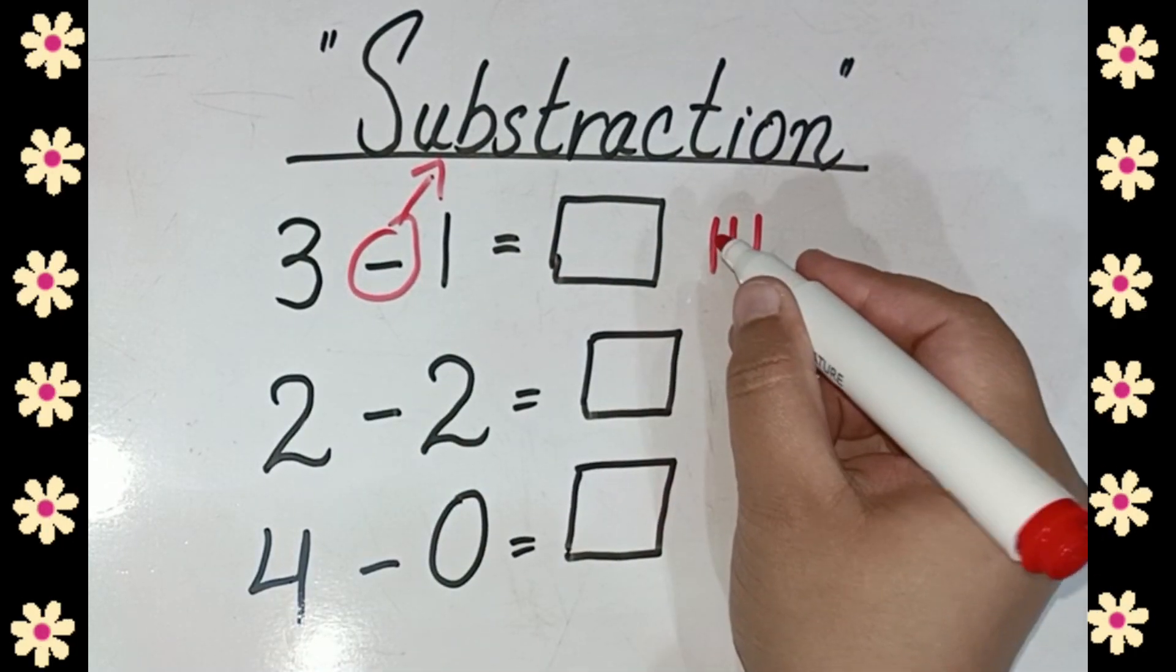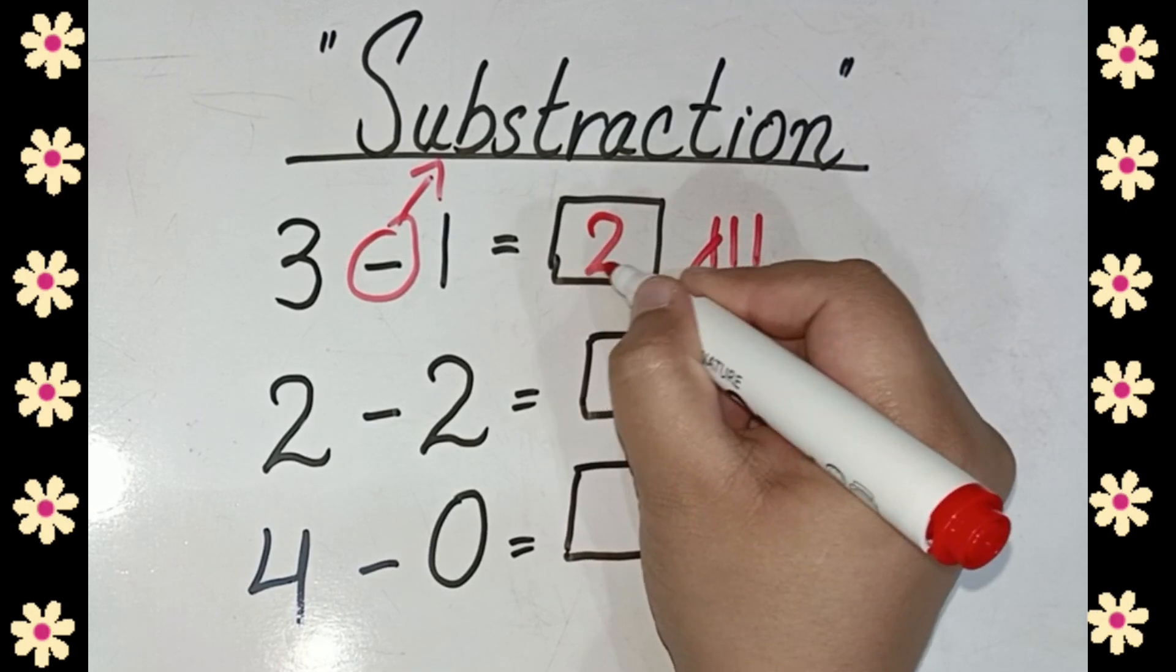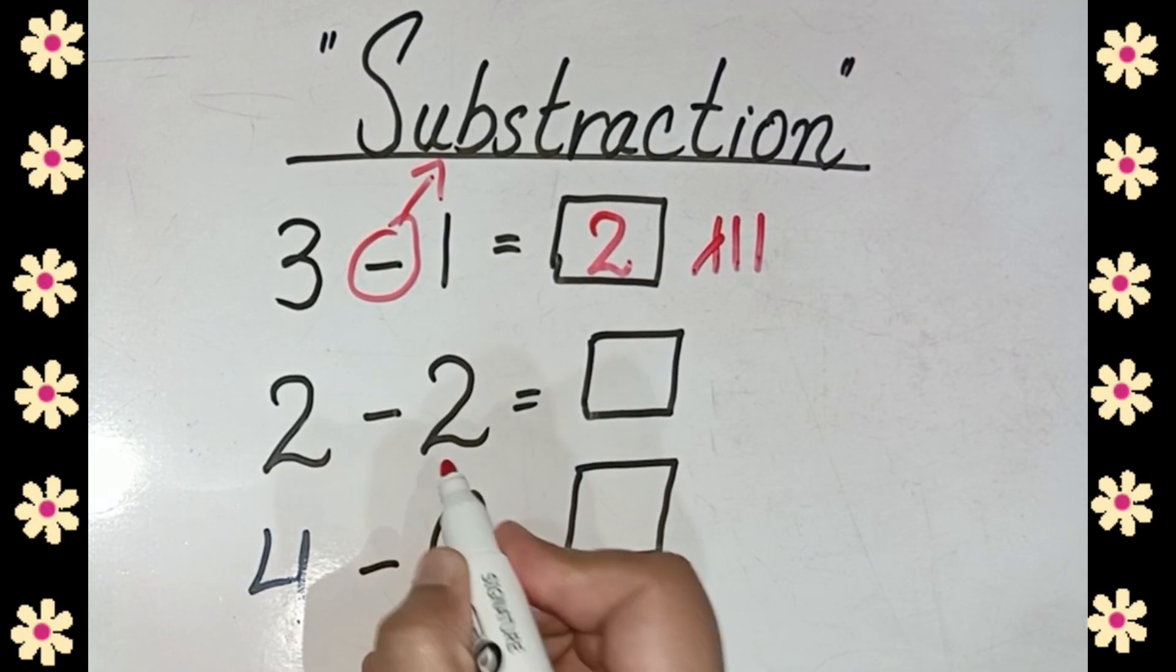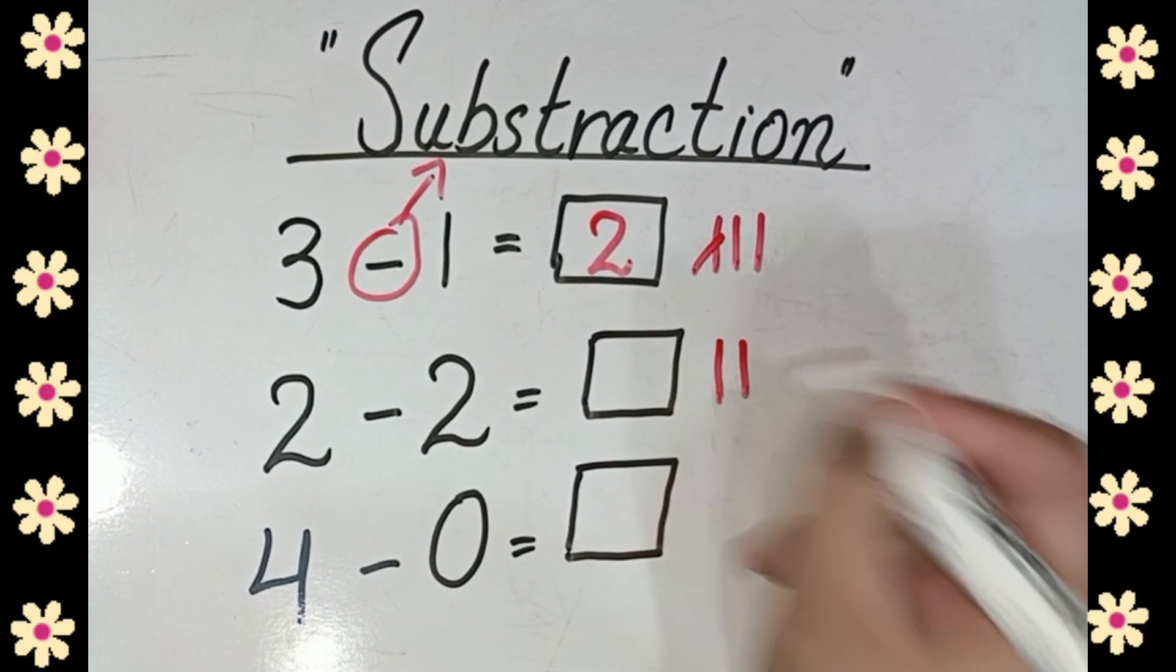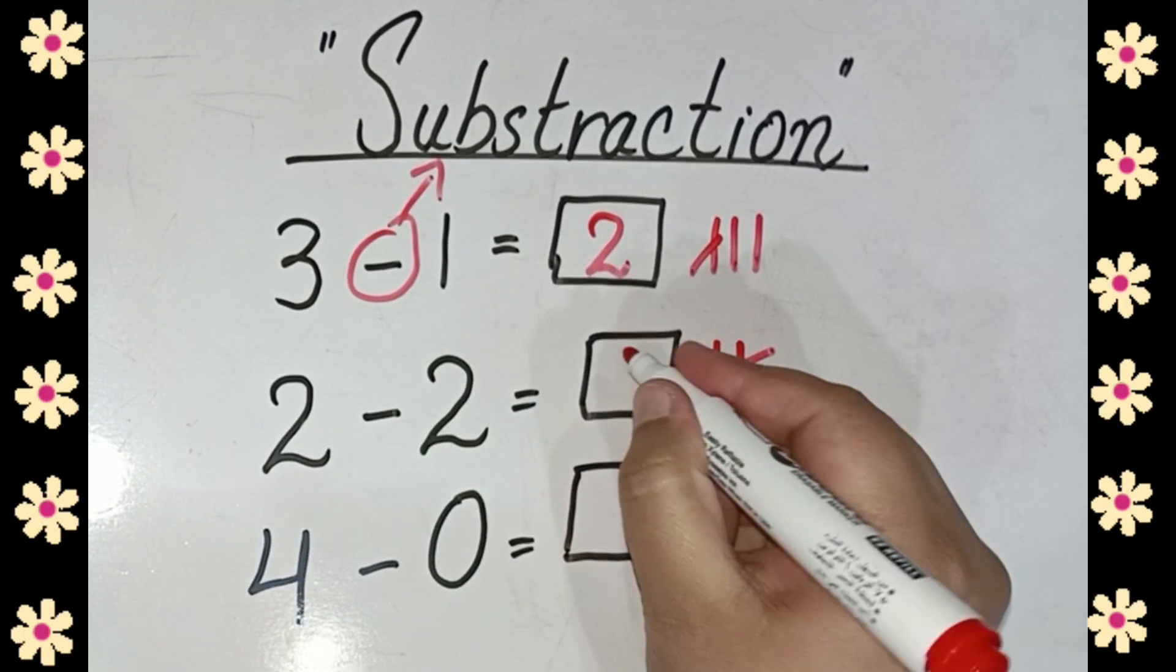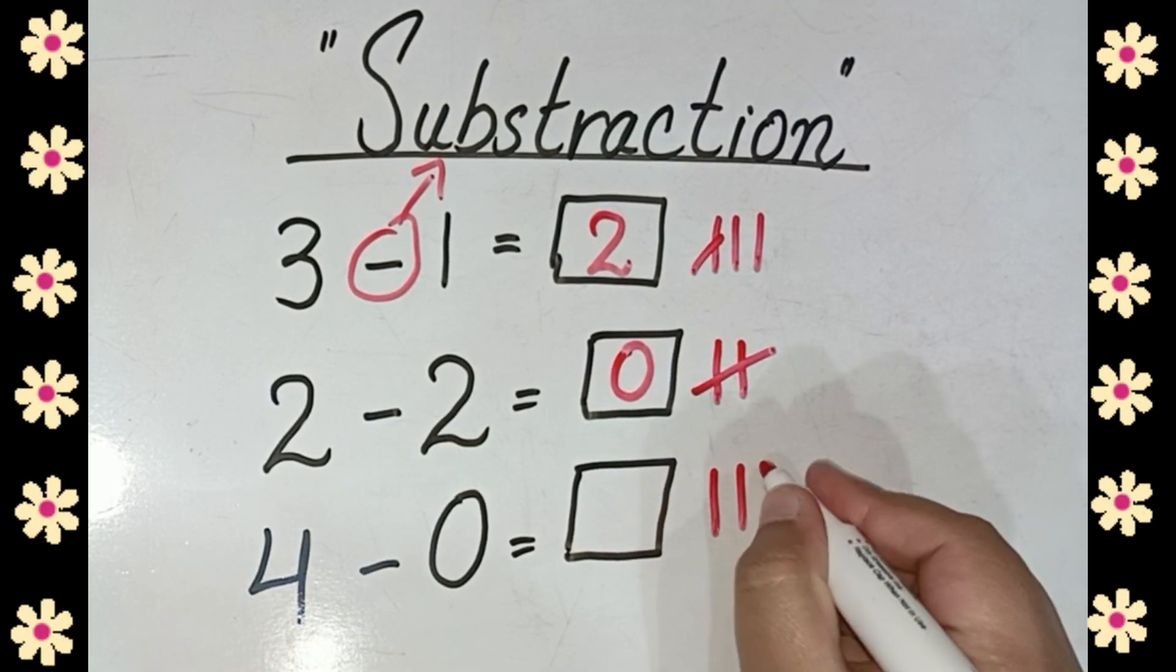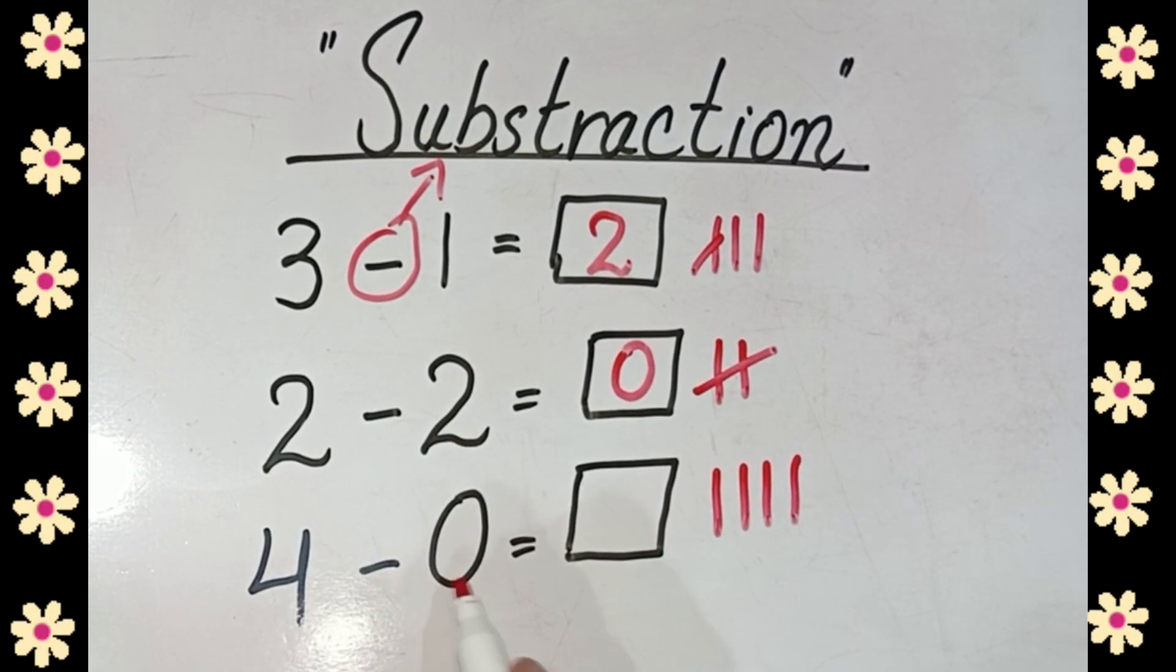So 3 minus 1, 3 minus 1, we have 2. Okay, then we have 2 minus 2, 2 minus... you have to cross this 2, 2 minus 2, so we have 0. 4, 1, 2, 3, 4 minus 0, there...